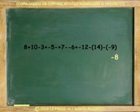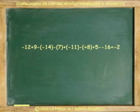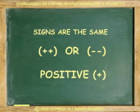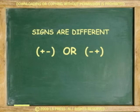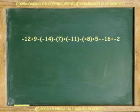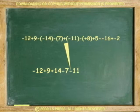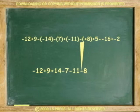By now we realize that having two signs together is confusing. We'll take a shortcut by converting all double signs into one, removing double signs and all parentheses, leaving only numbers and one sign between numbers, using the following rules: if the signs are the same, turn both signs into one positive sign; if the signs are different, turn both signs into one negative sign. Same → positive. Different → negative. So the expression with only one sign becomes: negative 12, plus 9 (two of the same, positive), plus 14, minus 7 (two different, negative), minus 11 (two different), minus 8, plus 5 (two of the same, positive), plus 16 (two different), minus 2.